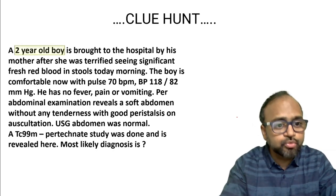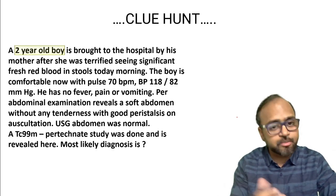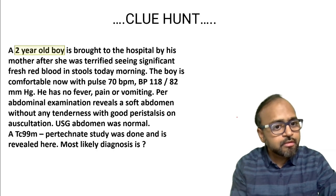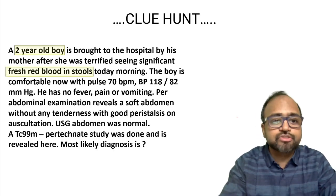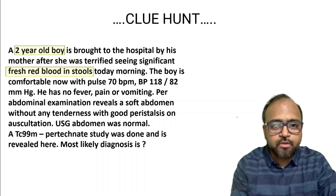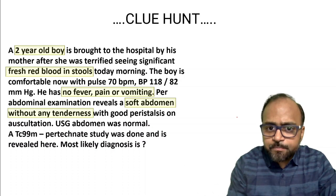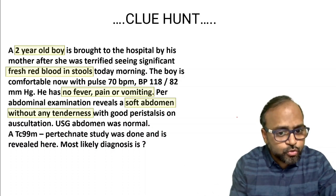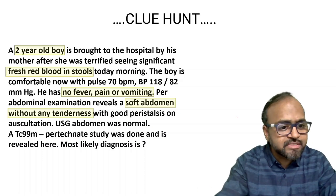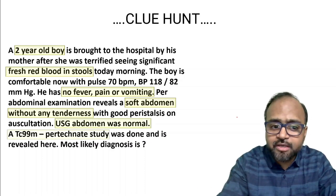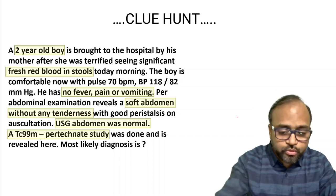So what are the clues? A two-year-old boy — a condition particularly seen in the pediatric age group. He is brought to the hospital because there was significant fresh blood in the stools. Clinically, the boy has no fever, no pain, no vomiting. The abdomen is soft, no tenderness, good peristalsis. The USG was normal and a pertechnetate study was done. Believe me, each of these is a clue.